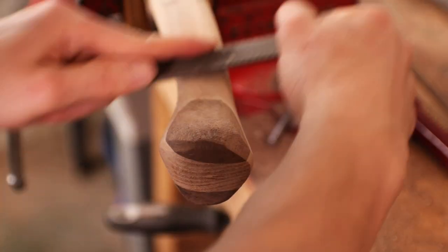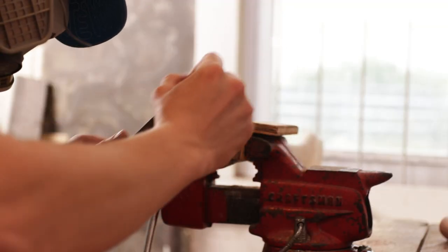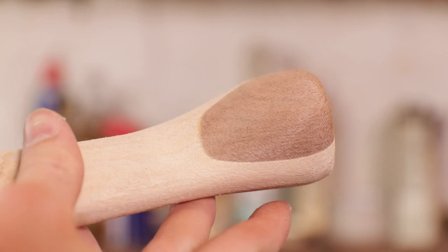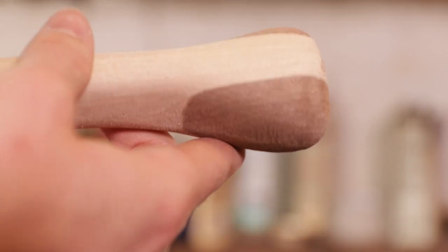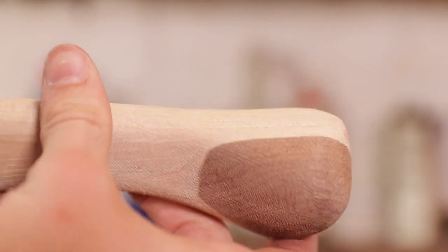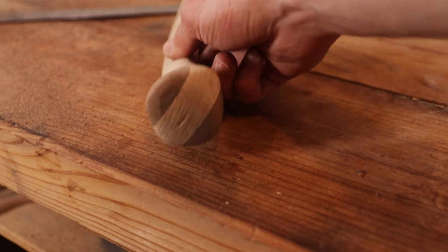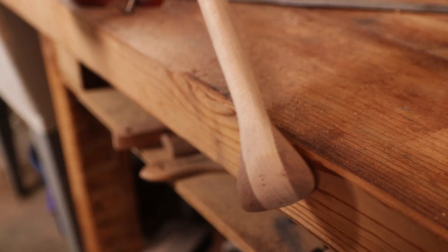Now that everything is rounded together, you can see everything looks way more symmetrical than it did before. This is partially because I took more material off on one side than the other in the front, but I also rounded it all together. Since it has more of a fluid shape, it kind of tricks the eye into seeming more symmetrical than it actually is. At this stage, now that I have everything rounded over and blended together, I'm almost done. All I have to do is sand it now.